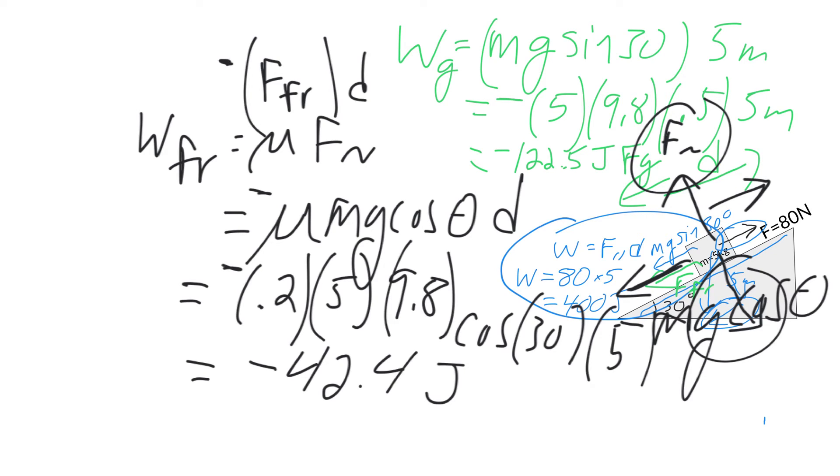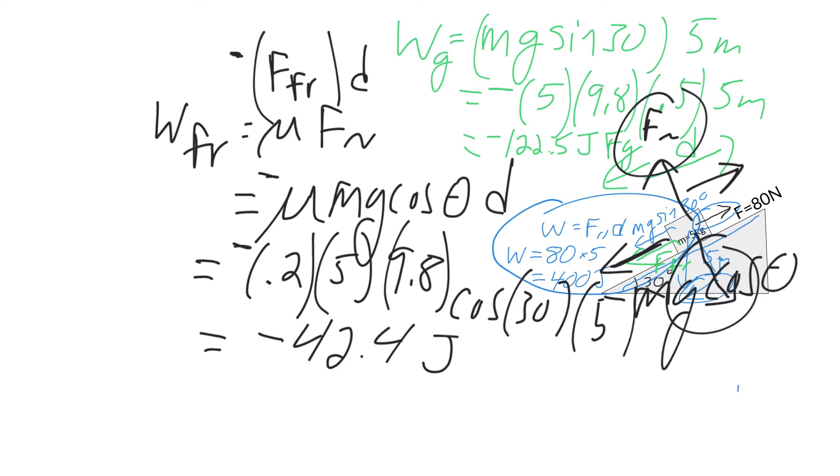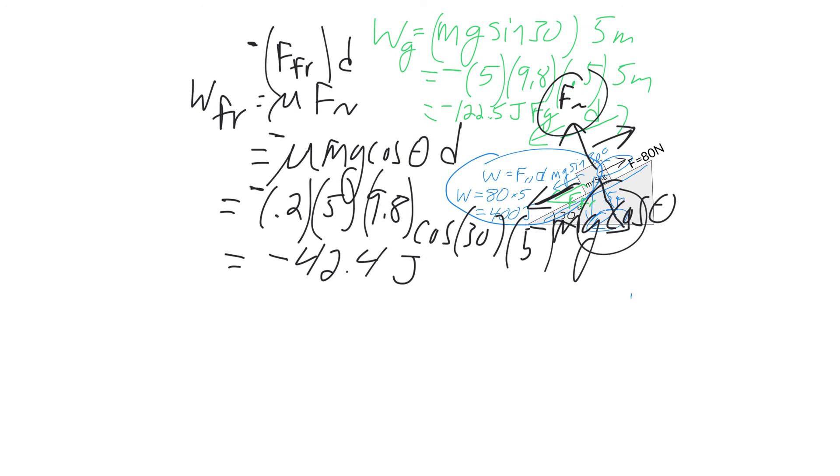So the last step is it is asking for the net work, right? So that's going to be all the works essentially added and subtracted from each other. So remember the first work, that is 400. So our net work, we had that work going up the ramp. That was 400 joules. Then we had minus the force of gravity coming down the ramp. That was right here. So that's minus 122.5 joules. And then lastly, we're going to subtract out this little guy right here. That was the work of friction, 42.4.